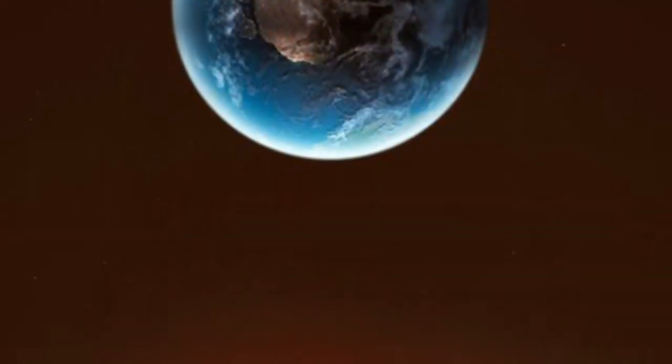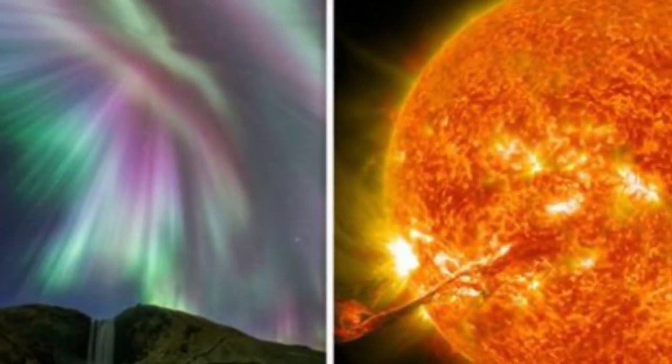The blast from the surface of the sun occurred on the 8th of March with a barrage of solar particles being spewed into deep space. As a result, Earth could be hit with solar storms between the 11th of March and the 13th of March.